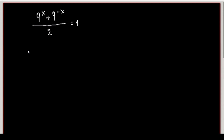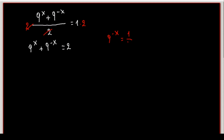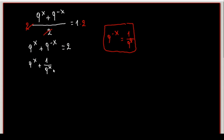We multiply both sides by 2, so we have 9 raised to the power of x plus 9 raised to the power of minus x equals 2. We know that 9 raised to the power of minus x equals 1 over 9 to the x, so we can write this as 9 to the power of x plus 1 over 9 to the power of x equals 2.